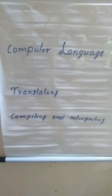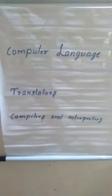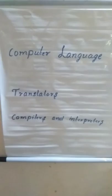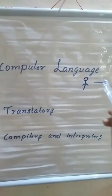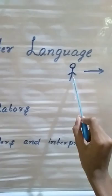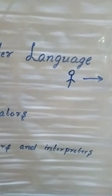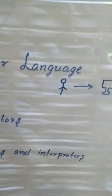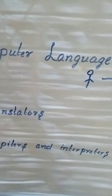Before entering into the programming codes, we will cover each of these terms: computer language, translators, compilers and interpreters. What is computer language? The language which is used to communicate between the man and the machine is known as computer language. Computer languages are classified into three: machine language, assembly language, and high-level language.